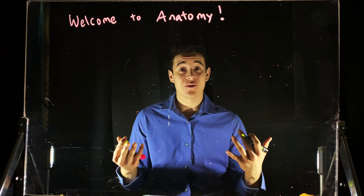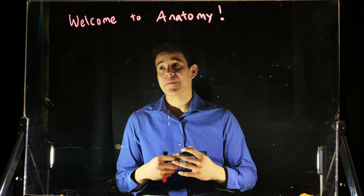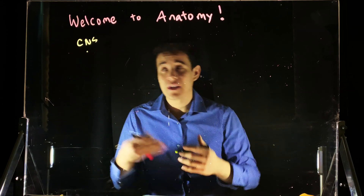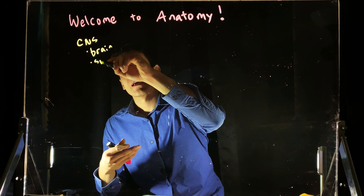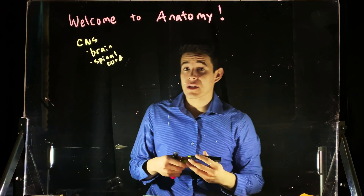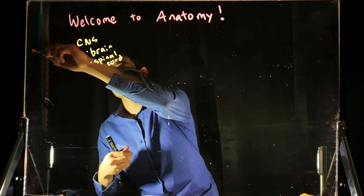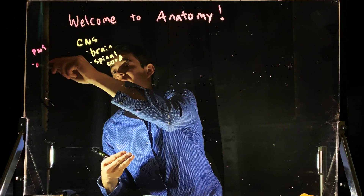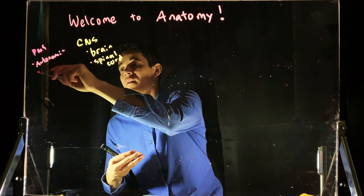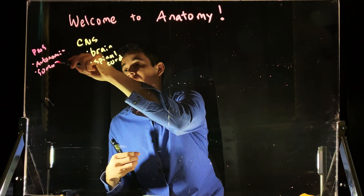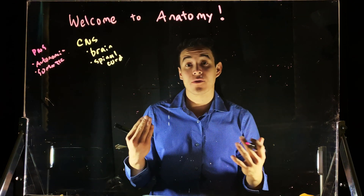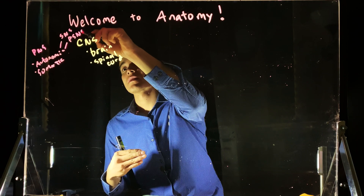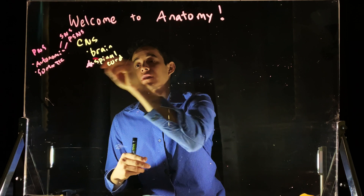Today we're going to start with the central nervous system and the peripheral nervous system. Let's get familiar with the spinal cord. We have to define the central nervous system — that's made up of two things: the brain and the spinal cord. The spinal cord is going to be the focus of our video today. We also have the peripheral nervous system, which is composed of the autonomic nervous system, and the autonomic nervous system can be broken down further into the sympathetic and parasympathetic nervous systems. Those are videos we'll talk about much later, but today let's focus on the spinal cord.